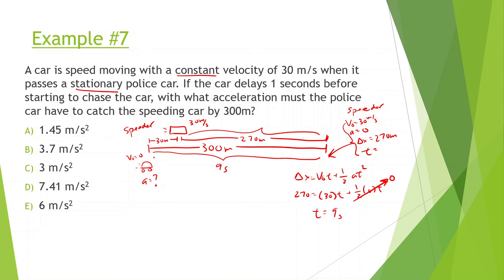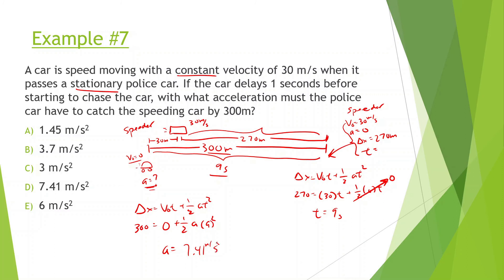Now for the police car: initial velocity zero, displacement 300 meters, time nine seconds. Using displacement equals V-initial times t plus one-half A t-squared: 300 equals zero plus one-half times a times nine-squared. Solving: a equals 300 times two divided by 81, giving 7.41 meters per second squared. That one was tough, but just take it a step at a time, draw it out for harder problems, and try to get more and more information. The more pieces you have, the easier the solution becomes.